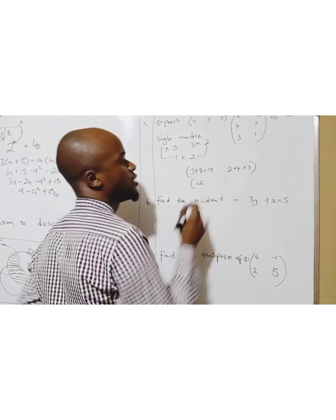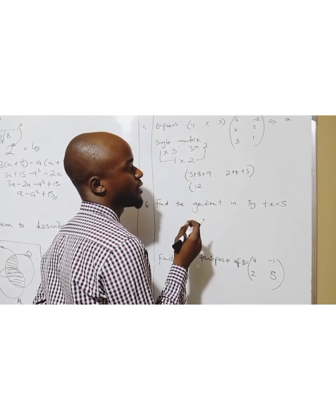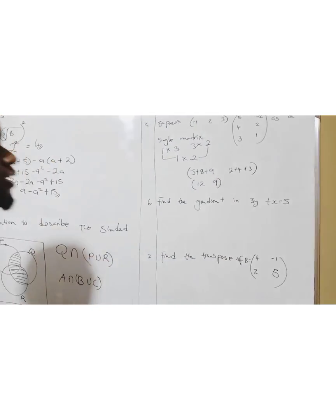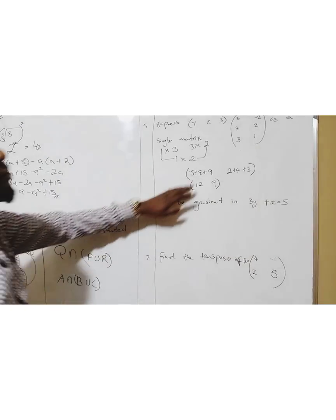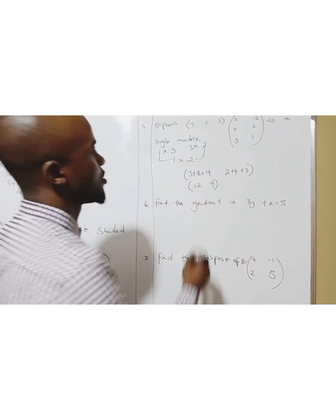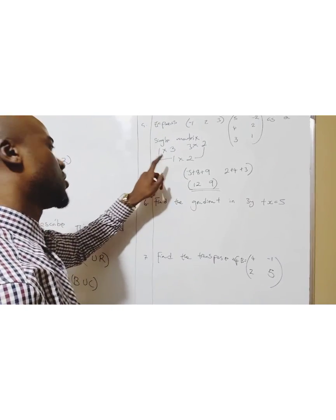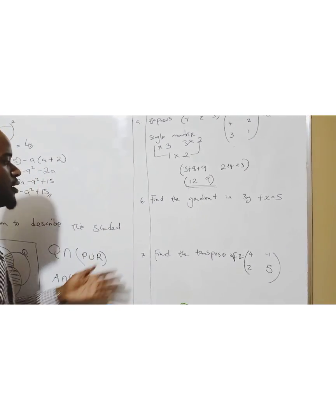What do we have here? Negative five plus eight is three, three plus nine is twelve. Then here, two plus four is six, six plus three is nine. So we have expressed this as a single matrix, which is [12, 9]. By the first thing, you always find the order.